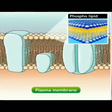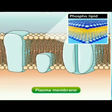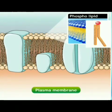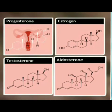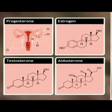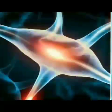For example, molecules called phospholipids, which are essential for producing the plasma membrane (also known as the cell membrane), are formed from fatty acids. Fatty acids are also used for producing hormones like progesterone, estrogen, testosterone, and aldosterone.